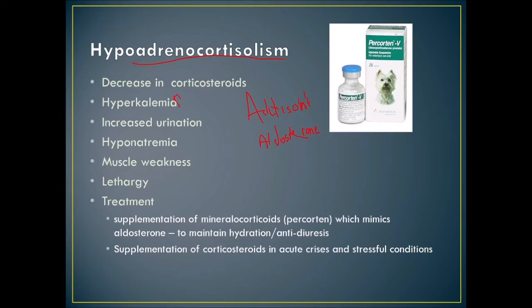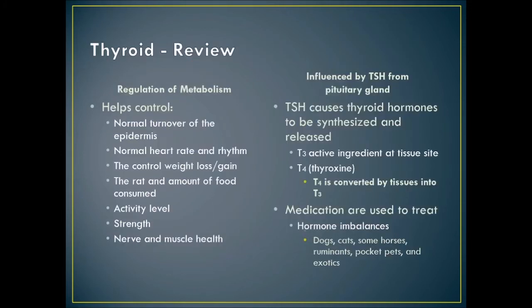The thyroid gland regulates metabolism, controls normal epidermis turnover, heart rate and rhythm, weight, food consumption rate, activity level, strength, and nerve and muscle health. It is influenced by thyroid-stimulating hormone — TSH — from the pituitary. TSH causes thyroid hormones to be synthesized and released. There are two forms: T3 is the active ingredient at the tissue site, and T4 is what we see in the bloodstream.